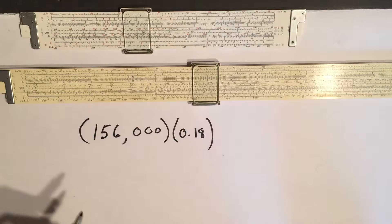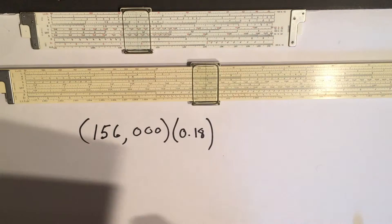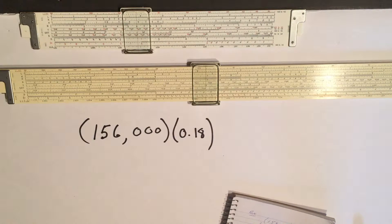But let's just take a real simple example. Say like you've got 156,000 times 0.18.